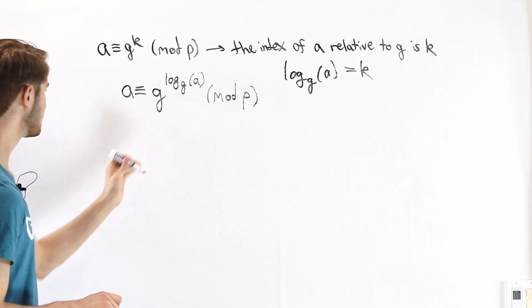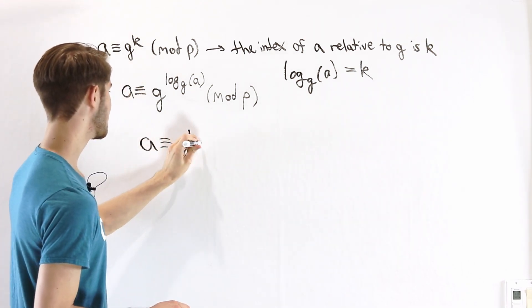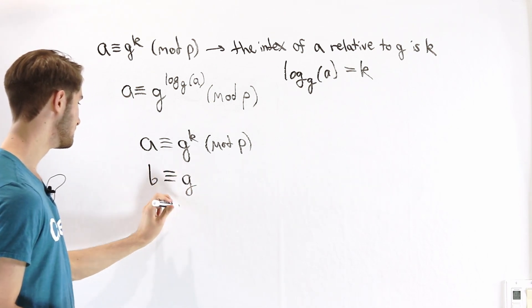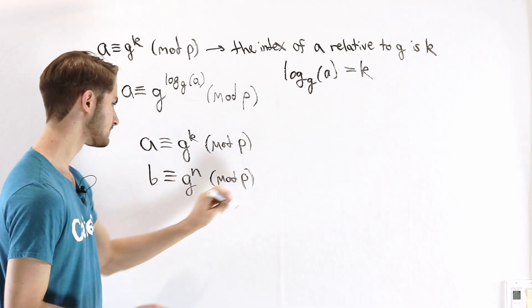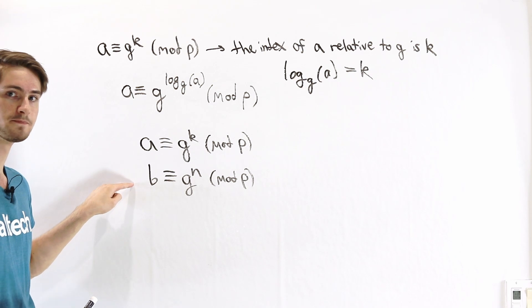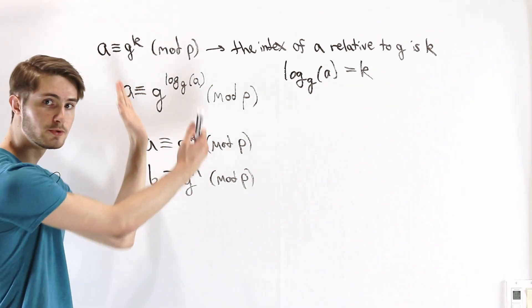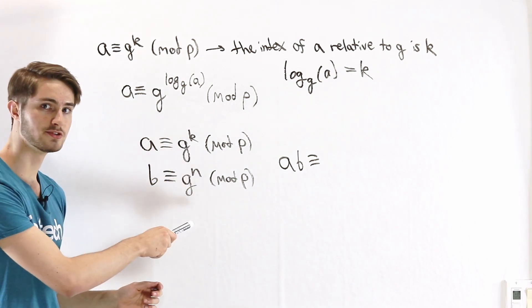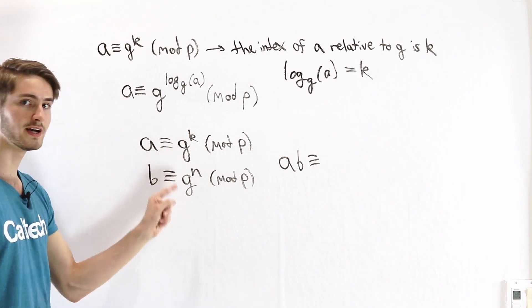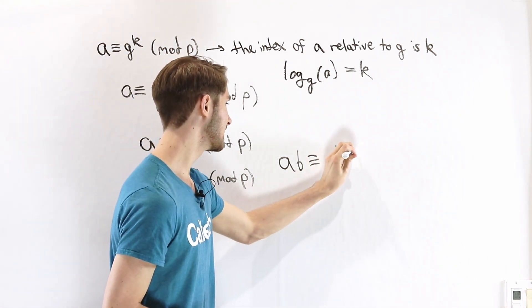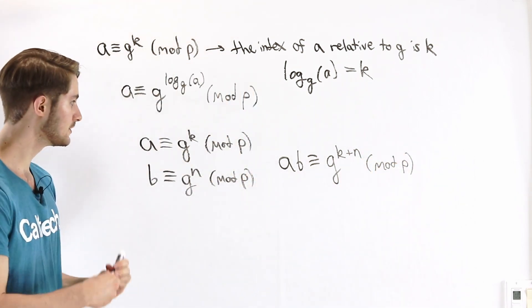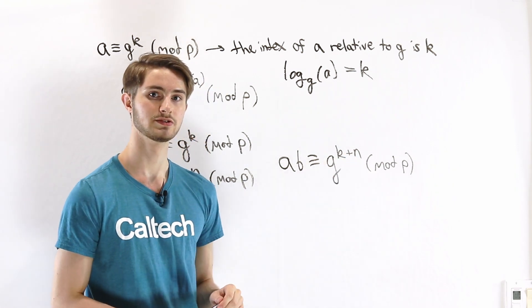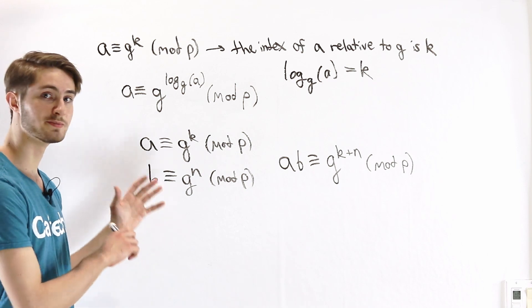Let's go through a few of those rules. First of all, suppose we have some number a which has an index of k relative to g, and further suppose we have some other number b with an index of n mod p. The question is: what would be the index of a times b? We know there's a multiplication rule for modular arithmetic, so we can multiply the left and right sides. What we get is a·b is congruent to g to the k times g to the n. There's an addition rule when we multiply two exponents, so that's the same as g to the power of k plus n, mod p. We've multiplied the two numbers and the result is that the index is k plus n — we've added the two indices.